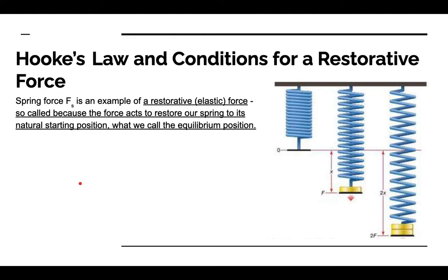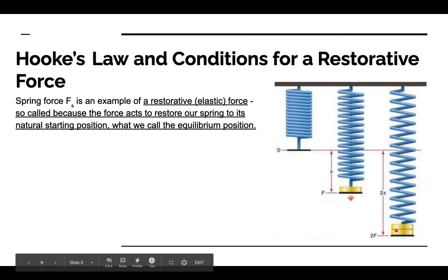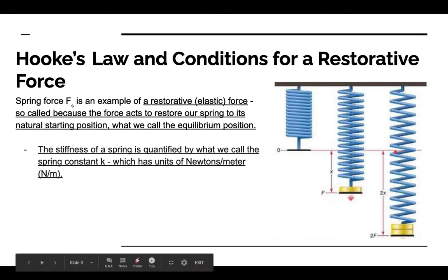What do we call this spring force? The spring force F_s is an example of a restorative — or elastic — force. It's so called because the force acts to restore the spring back to its natural starting position, which we call the equilibrium position. So if a spring has an unstretched length marked as zero, stretching it a distance x results in the spring exerting a force to pull it back to its equilibrium length, with more resistance the further it is pulled.